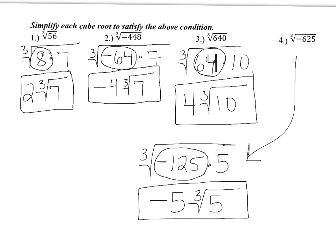Now that you've seen me do two of the problems, stop the video and try questions 3 and 4 on your own. For number 3, you should have gotten 4 cube root of 10. And for number 4, you should have gotten negative 5 cube root of 5. If you're at all stuck, look at your work and see if you can figure it out. If you're still stuck, make sure you stop the video and ask for some help.